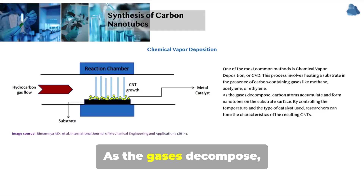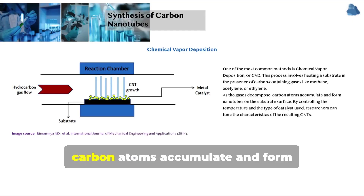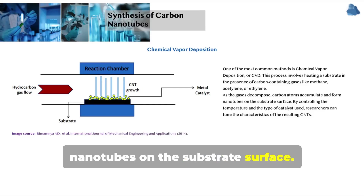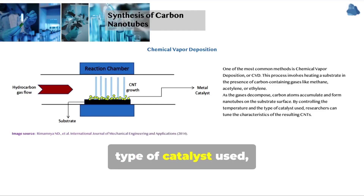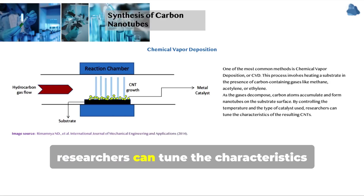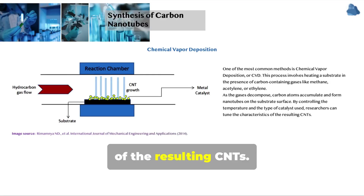As the gases decompose, carbon atoms accumulate and form nanotubes on the substrate surface. By controlling the temperature and the type of catalyst used, researchers can tune the characteristics of the resulting CNTs.